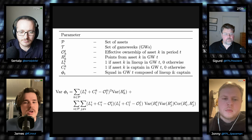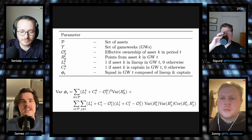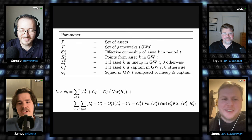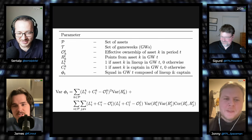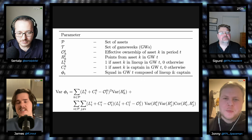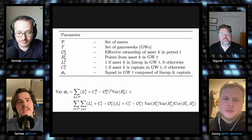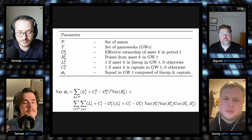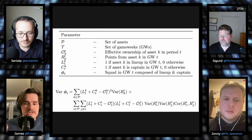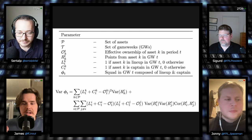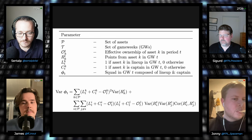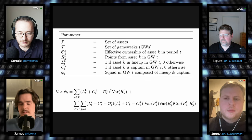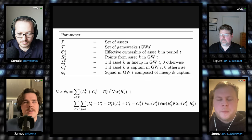We can talk about absolute risk — the deviation you expect in the amount of points your team scores — or relative risk, which is the deviation you expect in your rank. Relative risk is much more interesting. The formula for relative variance works like this: you own every single asset in the game, but the ones you don't own, you own with a negative weight proportional to how many people around you own them. So if everybody else in the game owns a player and you don't, you effectively own them negatively. That, in my opinion, is the best way to quantify risk in FPL.